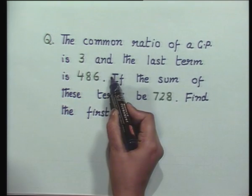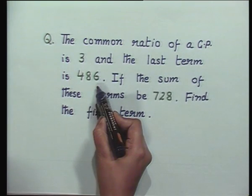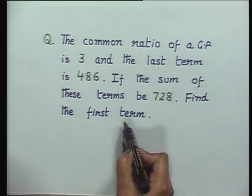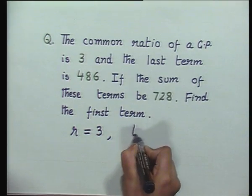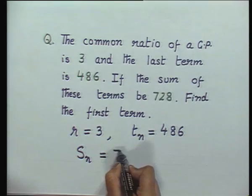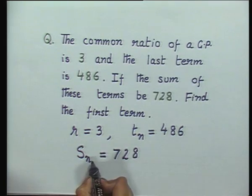Let us take another one where you will be tested on both the results we have learnt so far in GP. The question says: the common ratio of a geometric progression is 3, and the last term is 486. If the sum of these terms is 728, find the first term. Read the question and first identify what is given. Shipra, let us see what you can identify. r = 3, the nth term tn = 486, and Sn = 728. So knowing all these, we have to find a.